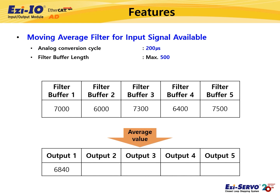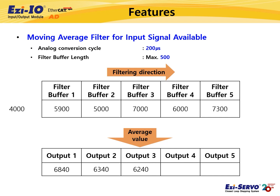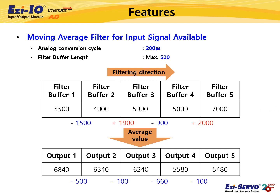New input data is saved in the filter buffer. When the next sampling data is input, the oldest data is deleted and the new input data is saved in the buffer in order, and the average value of the 5 input values is calculated. You can see that the differences between the values are smaller when the moving average filter is applied.